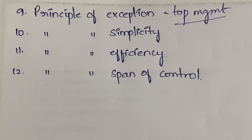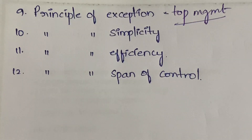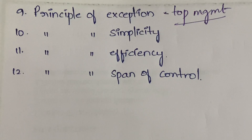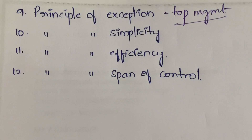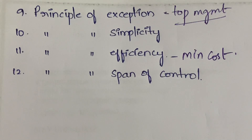The principle of simplicity states that the organization structure should be very simple so that everybody can understand it and perform better. Next, the principle of efficiency means that whatever you are producing or whatever outcome you bring should be done at the minimum possible cost. Everyone can do business, but the person who does it with minimum cost will succeed — the output should be efficient and effective.